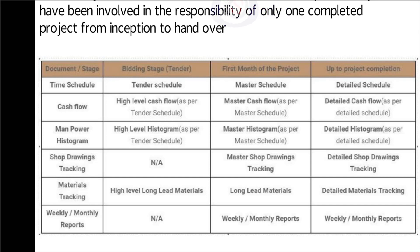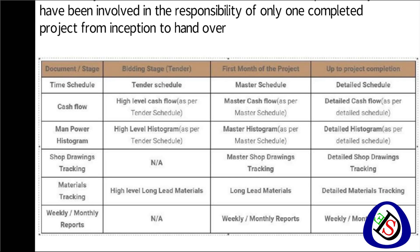The third row covers manpower histogram: high-level histogram as per tender schedule, master histogram as per master schedule, and detailed histogram as per detailed schedule. The fourth row is shop drawings tracking: not available for bidding stage, master shop drawing tracking in the first month, and detailed shop drawing tracking up to completion. The fifth row is materials tracking: high-level long lead materials in bidding stage, long lead materials in first month, and detailed materials tracking up to completion. Weekly and monthly progress reports are not available for bidding stage but are required from the first month through project completion.